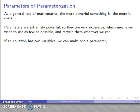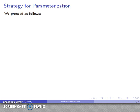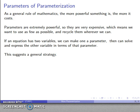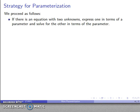Let's think about this. If an equation has two variables, I can make one of them a parameter, but then I can solve and express the other variable in terms of that parameter. So I might proceed as follows: if I can find an equation with just two unknowns, I can express one of them in terms of a parameter and solve for the other one in terms of that same parameter.